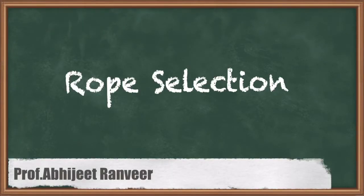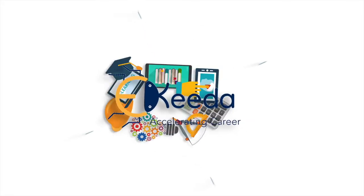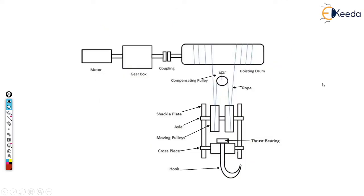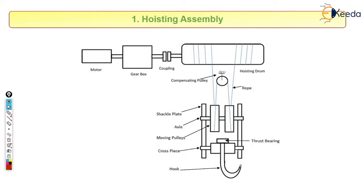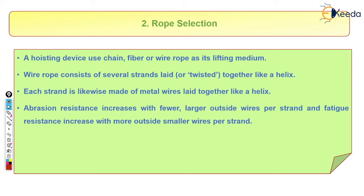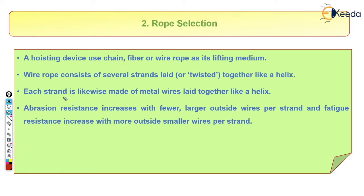In this video we will study about rope selection. We have already seen the hoisting assembly diagram and we know how the rope performs a very important role here to lift the load. In case of a lifting medium or any hoisting device, we can use chain, fiber, or wire ropes. In our case we have focused on wire ropes.